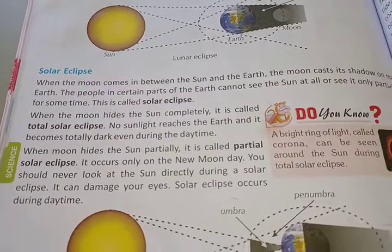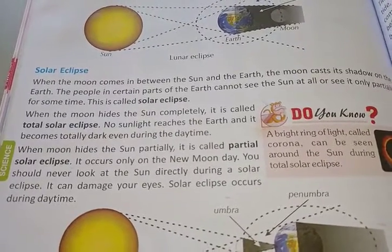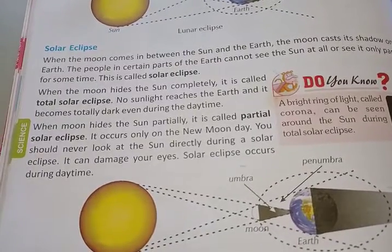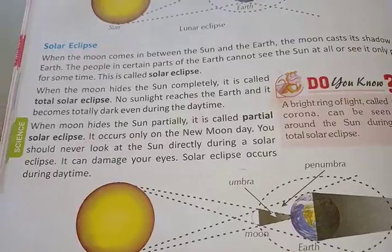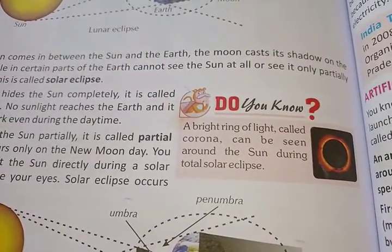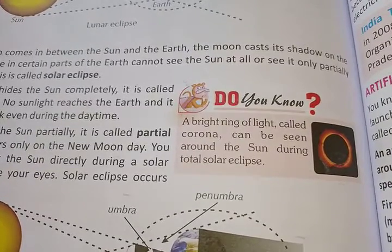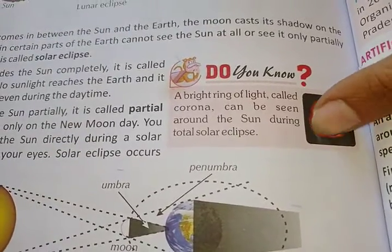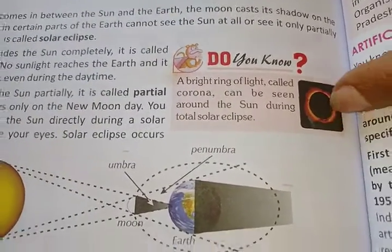You should never look at the Sun directly during a solar eclipse, as it can damage your eyes. Solar eclipse occurs during daytime. The bright ring of light called the corona can be seen around the Sun during a total solar eclipse. This bright ring of light is visible when the total solar eclipse occurs.